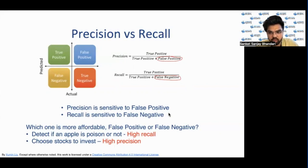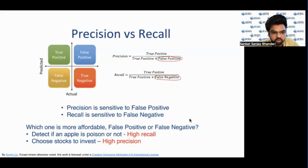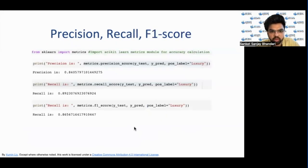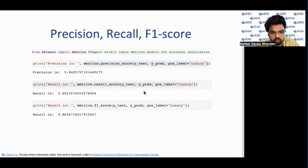We can select a model based on how much we can afford false positives or false negatives — it differs from case to case. For example, when detecting whether an apple is poisoned we need higher recall, while when choosing stocks to invest in we need high precision. This is the basic implementation of precision, recall, and F1 score in scikit-learn, where from sklearn.metrics we import precision_score, recall_score, and f1_score, passing y_test (the test labels) and the predicted values.